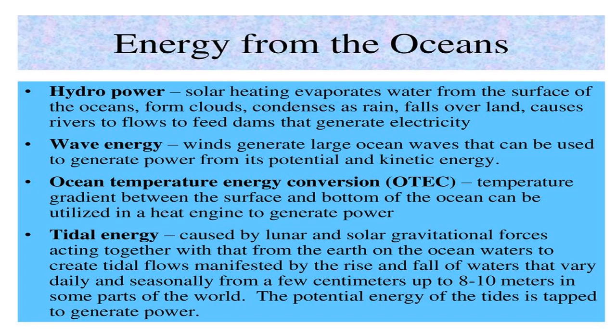The second one is wave energy. Wave energy means winds generate large ocean waves that can be used to generate power from their potential and kinetic energy. The third one is ocean temperature energy conversion, OTEC. The temperature difference gradient between the surface and the bottom of the ocean can be utilized in a heat engine to generate power. This is OTEC — ocean temperature energy conversion.